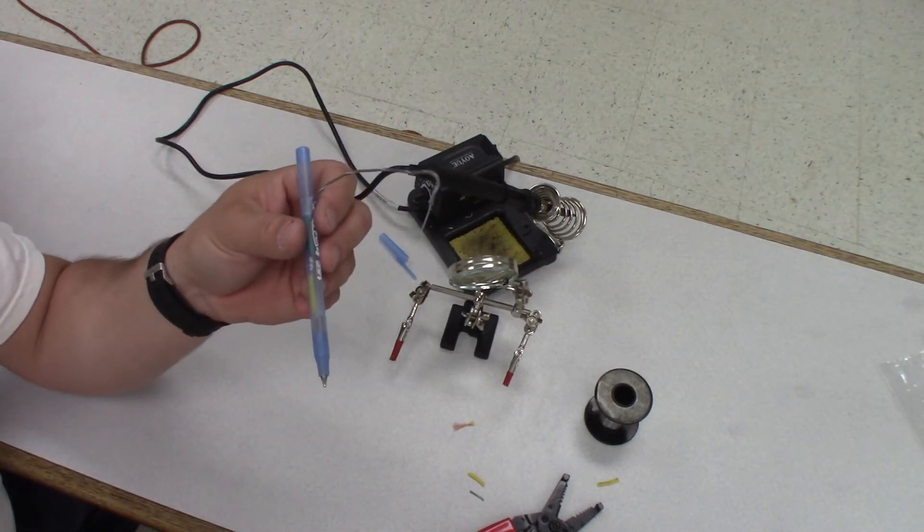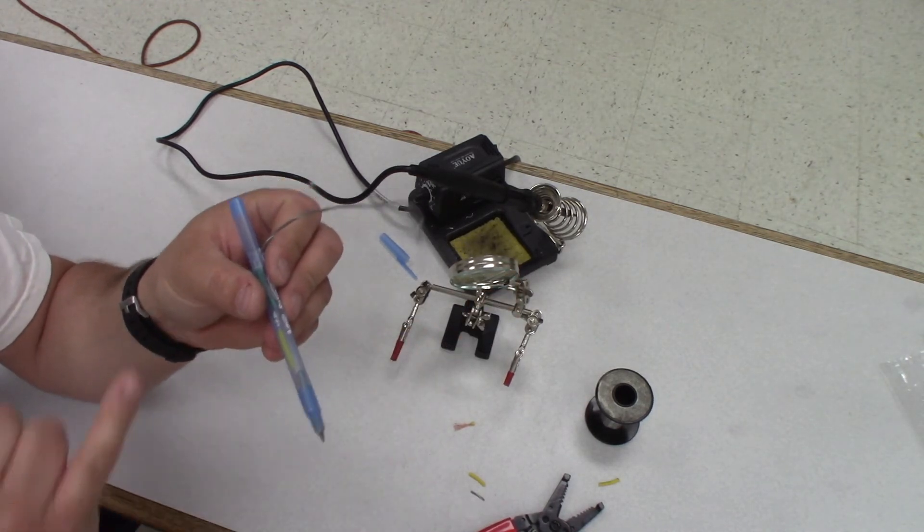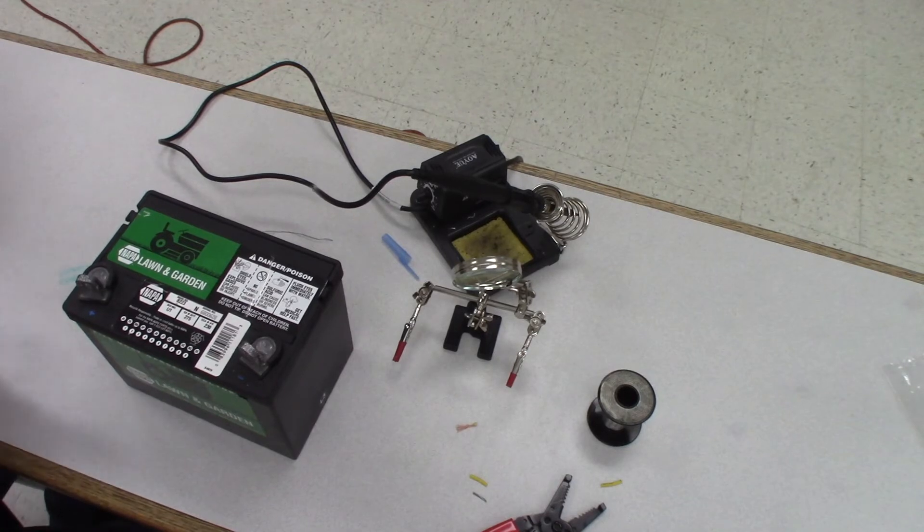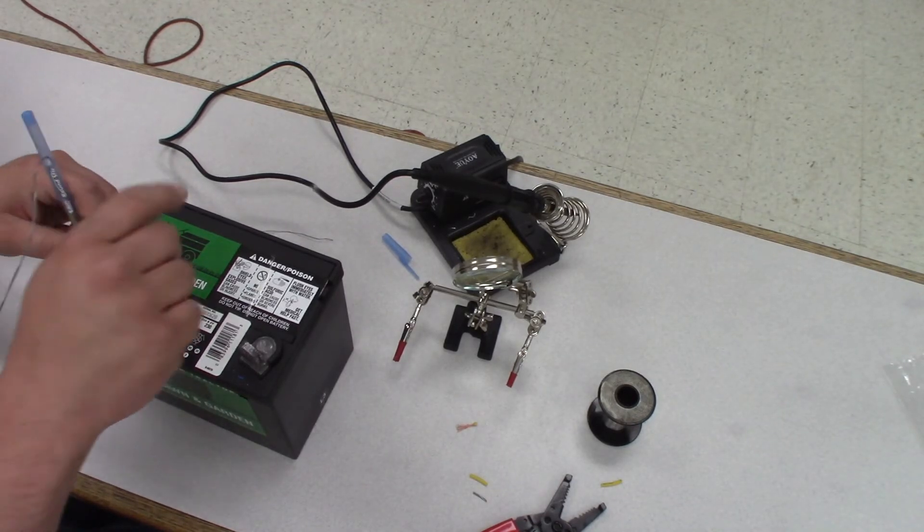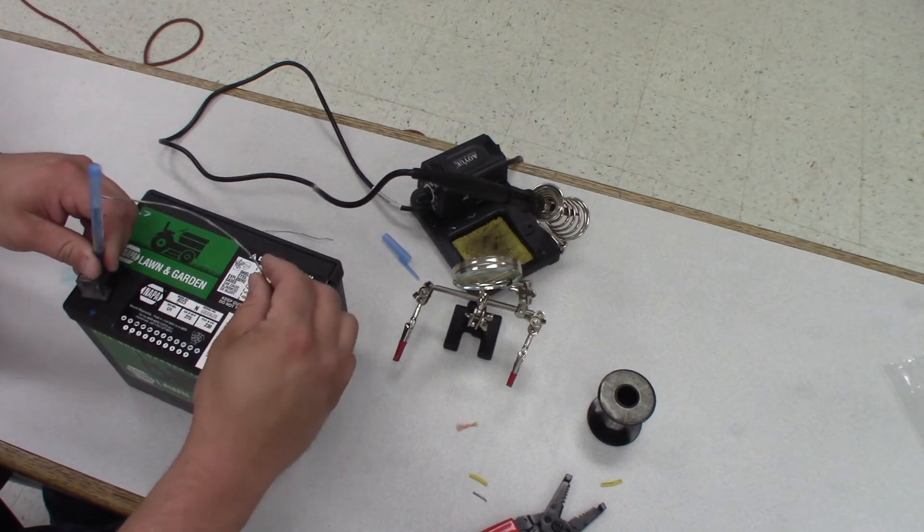At this point you can take a battery and check—put the tip on the positive side, this end on the negative side, it should light up nice and blue. So here we got a battery. We'll go ahead and touch this to the positive side, negative—it lights up blue. We're good to go.